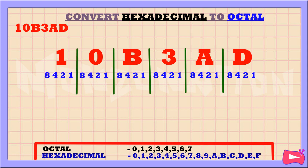Let's start from the right. D is the sum of 8 plus 4 plus 1, so we're going to replace 8, 4, and 1 with 1. We didn't use the 2, so let's replace it with a 0.